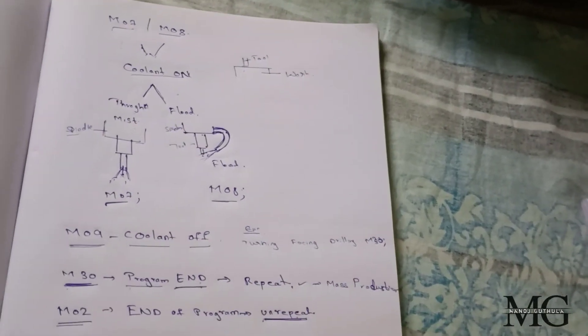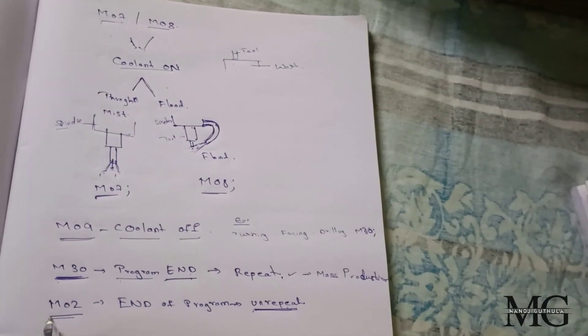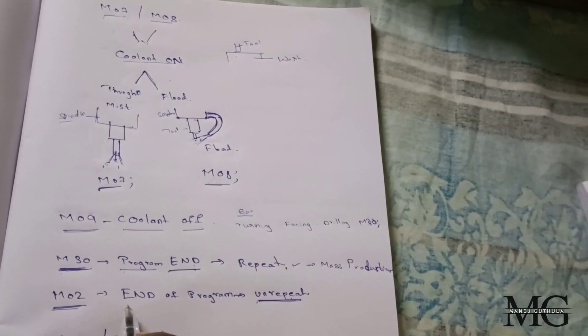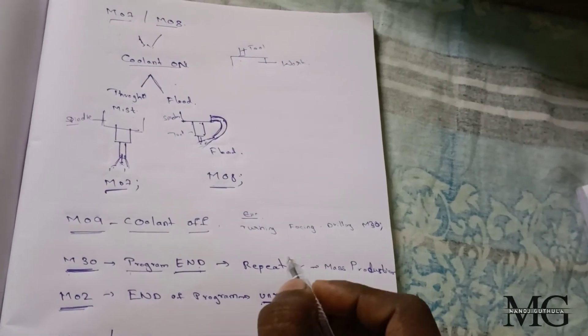There is also to stop the program, we also use M02 at the end of the program. This is also known as end of program.